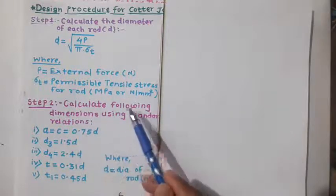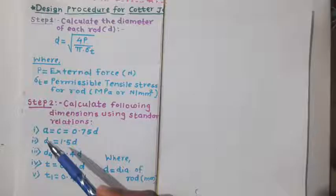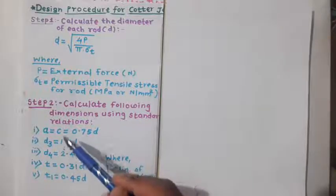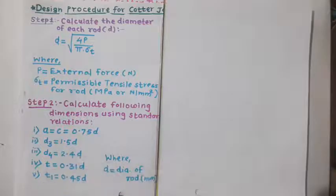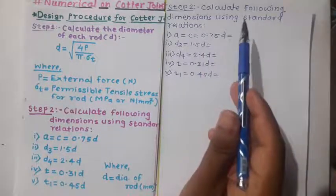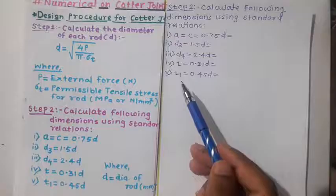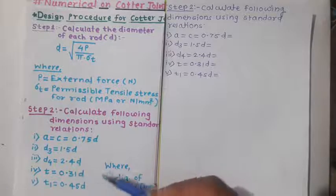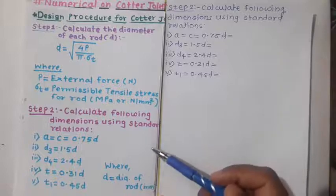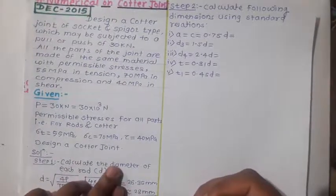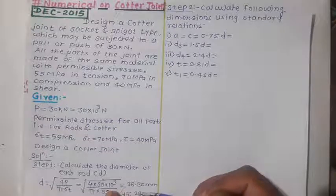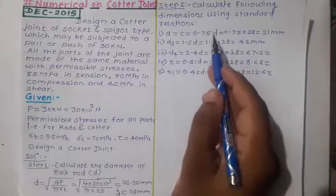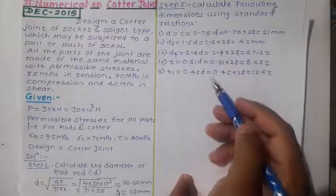Step number two: calculate the following dimensions using standard relations. There are five parameters to calculate from standard relations, and we substitute the value of small d = 28 mm into each relation.